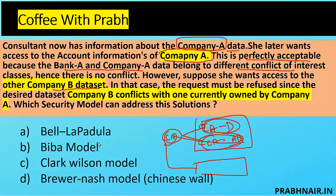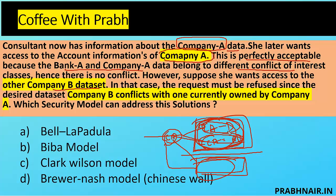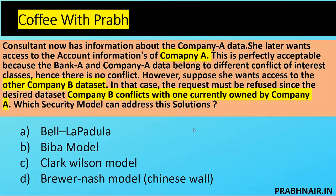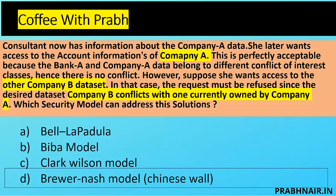Bell-LaPadula talks about confidentiality, restricting top-secret users from accessing low-secret resources. Biba focuses on integrity. Clark Wilson talks about separation of duty but is limited to one process only. Here they're talking about the same set of information belonging to different companies — requiring clear segregation. The only option left is the Brewer-Nash model. Whenever the consultant logs in and has one company's data set, they will not have access to a competing company's data set. That is why the answer is D for Delta — Brewer-Nash model.